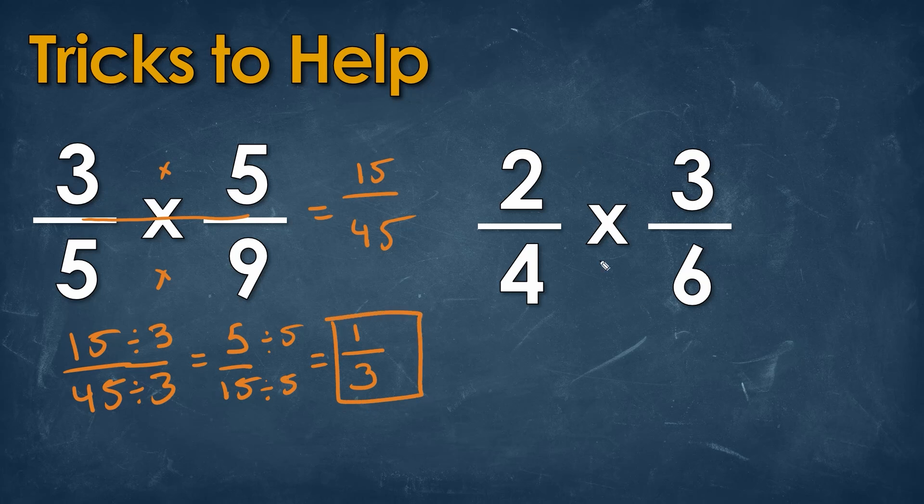Now, another trick that we can do is actually simplify the value first before we actually multiply across, and this is really helpful when you have really, really big numbers. We can simplify this first fraction by dividing top and bottom by 2, which will end up giving us 1 half, times 3 over 6, which we can simplify by dividing out a 3 on top and bottom, which will give us another value of 1 half. Multiplying this across, we're going to get 1 over 2 times 2, which is 4. So, our answer is 1 over 4.